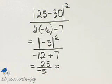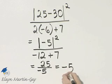Then 25 divided by negative 5, that's a positive divided by a negative. The result is negative. And 25 divided by 5 is 5, so the result is negative 5.